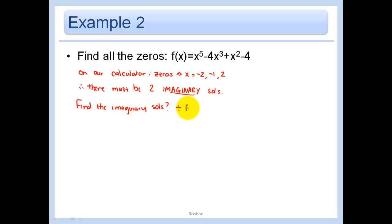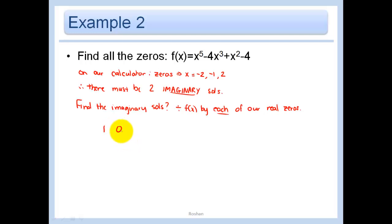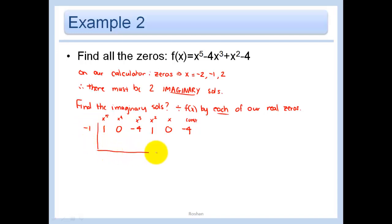To find the imaginary zeros, we divide f of x by each of our real zeros using synthetic division. Be sure to include placeholder zeros for missing terms — this is a degree 5 polynomial so we need coefficients for x to the 5th, 4th, 3rd, 2nd, x, and constant. Using negative 1 as the first zero: bring down the 1, multiply, add up through all terms, and we get a remainder of 0, as expected.